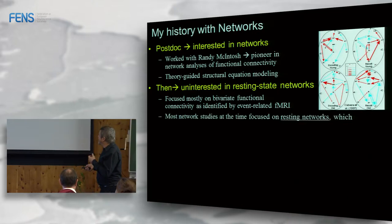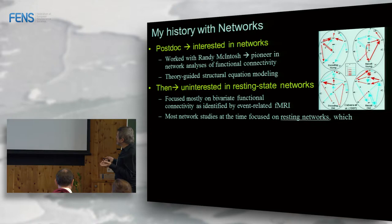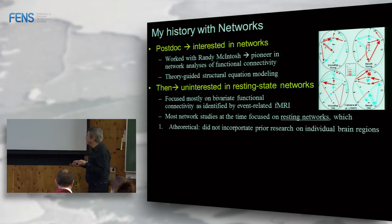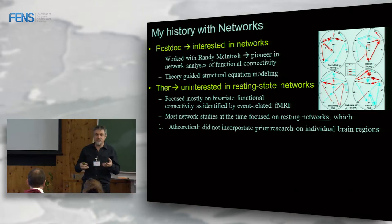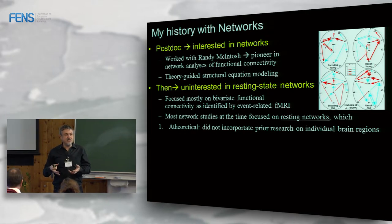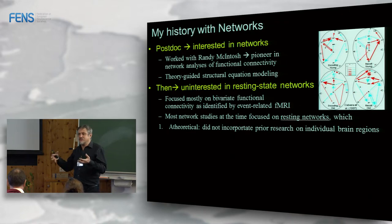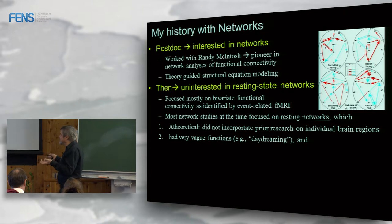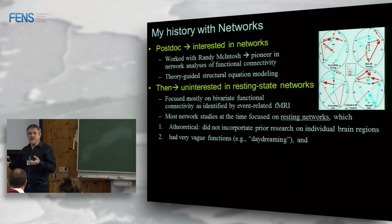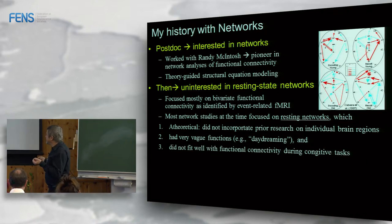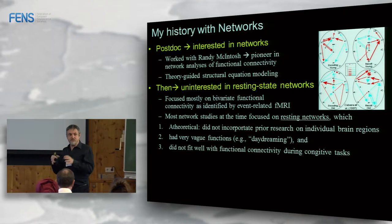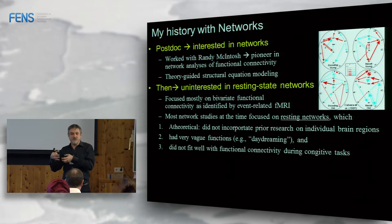Between the late 1990s and a few years ago, most network studies focused on resting-state networks, and I had a few problems with that. They are usually atheoretical — they use data-driven methods that separate groups of networks but are not always integrated with what we know about specific regions. They would say, 'these regions are in the default network,' and when asked what they do, sometimes the answer was just 'what the default network does,' with vague functions like daydreaming or self-processing.